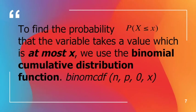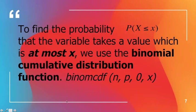Now, what about the probability of X less than or equal to x? To find the probability that the variable takes a value which is at most x, we use the binomial cumulative distribution function — the CDF. This is used when we want P(X ≤ x) or P(X < x). On your GDC you'll find binomCDF(N, P, lower bound, X).